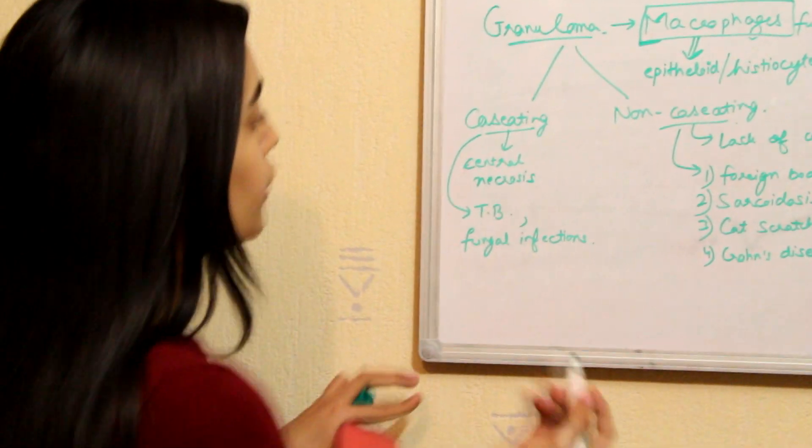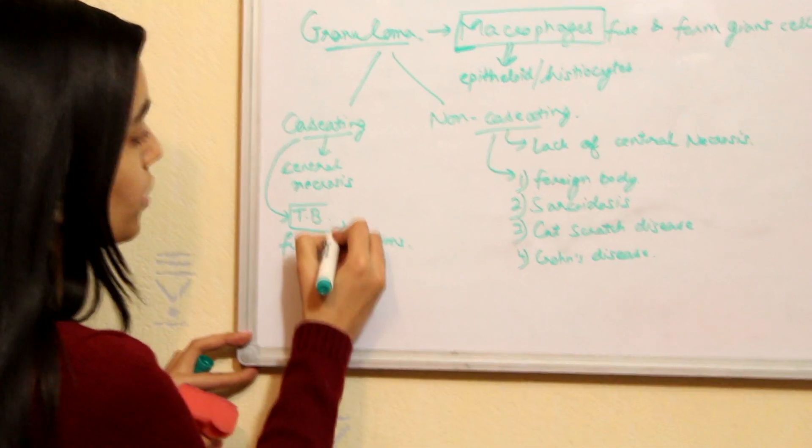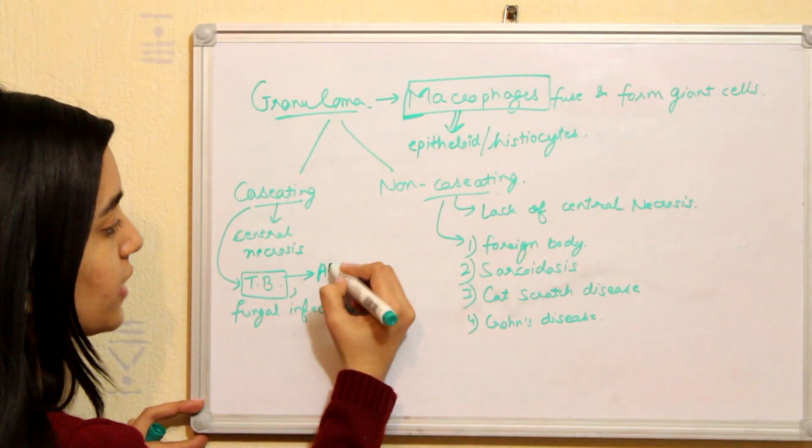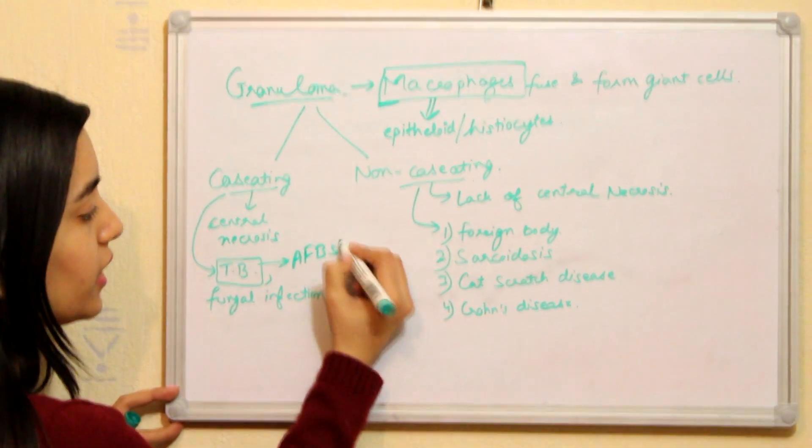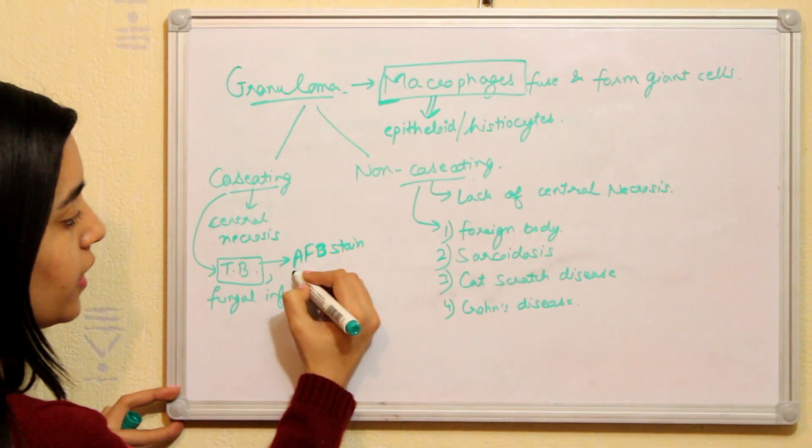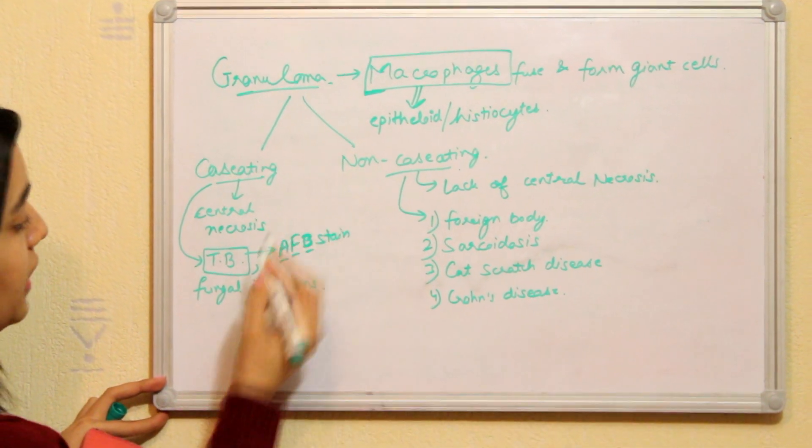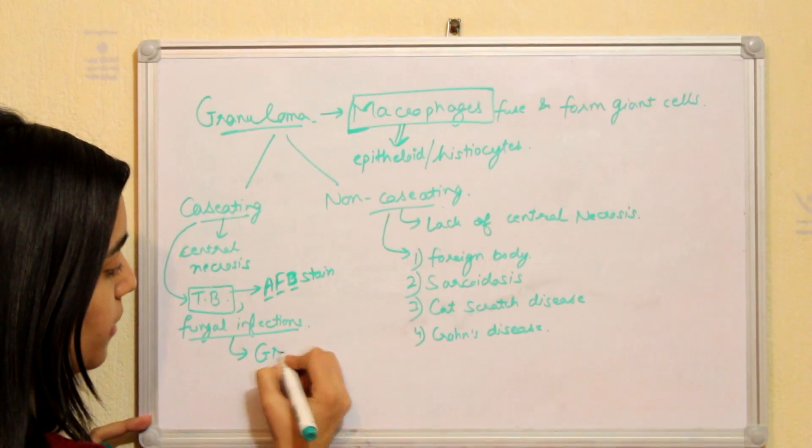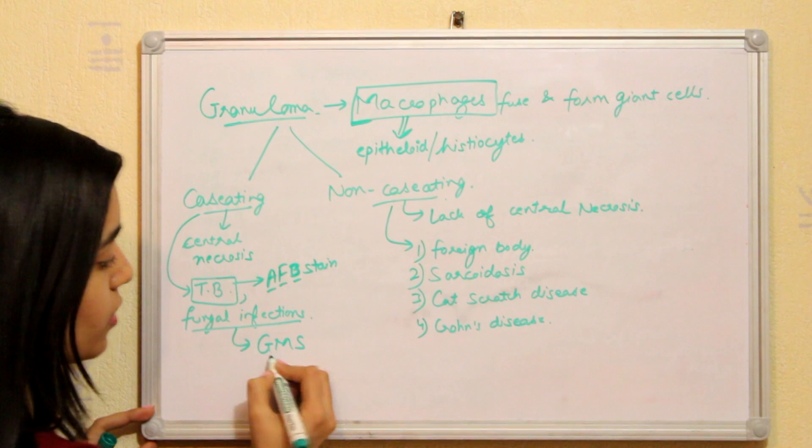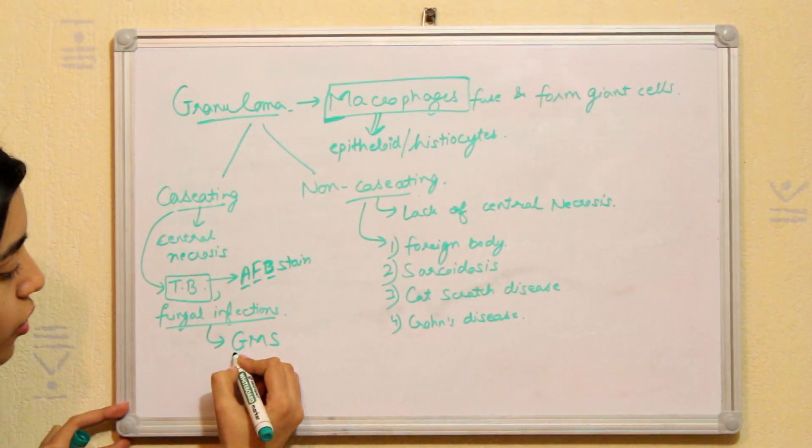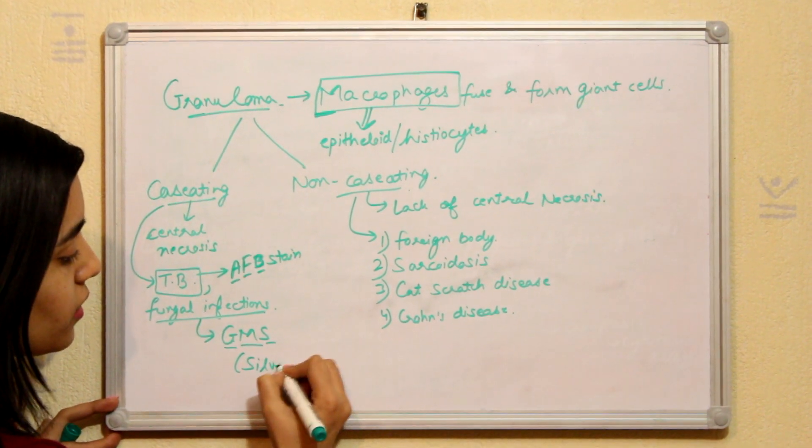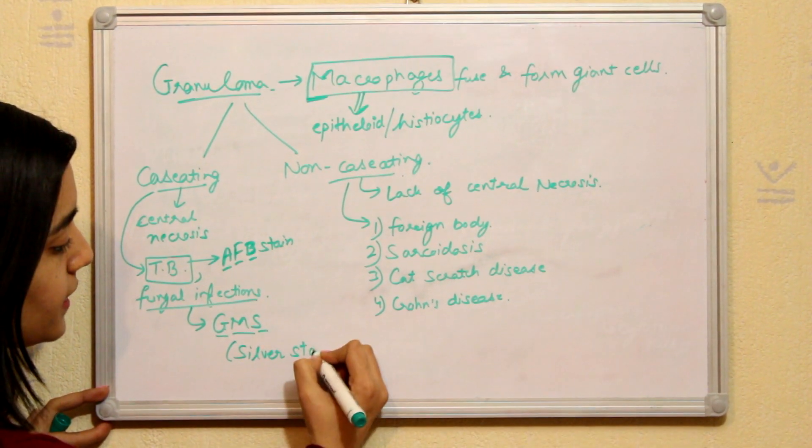And just for extra information, you can also note that for the diagnosis of TB tuberculosis, acid fast bacteria stain is used. The short form here is AFB, acid fast bacteria. And for fungal infections, we can use GMS stain, which is Grocott's Methenamine Silver stain. It is also called just silver stain.